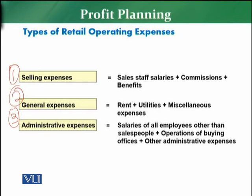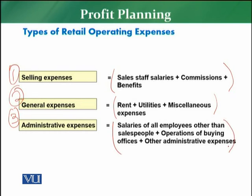Selling expenses include all staff salaries, commissions, incentives, and benefits. General expenses include rent, utilities, miscellaneous and other expenses. Administrative expenses cover the salaries and benefits of all non-sales people — operations staff, buying staff — anyone who is not directly in sales. When we accumulate all three types of expenses and calculate the percentage, that gives us total operating expenses.